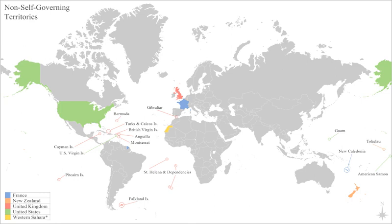Barbados was a colony of Great Britain important in the Atlantic slave trade, gaining independence in 1966. Brazil was a colony of Portugal since the 16th century, independent since 1822. Canada was formerly colonized first by France as New France and England in Newfoundland in 1582, then under British rule from 1763 to 1867, before achieving dominion status and losing the colony designation.